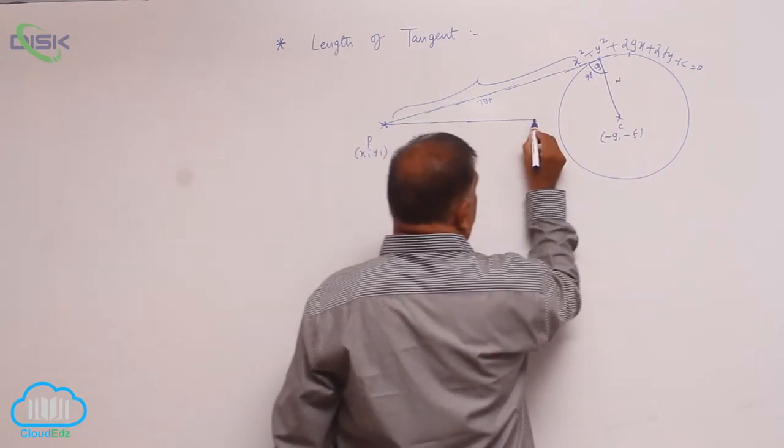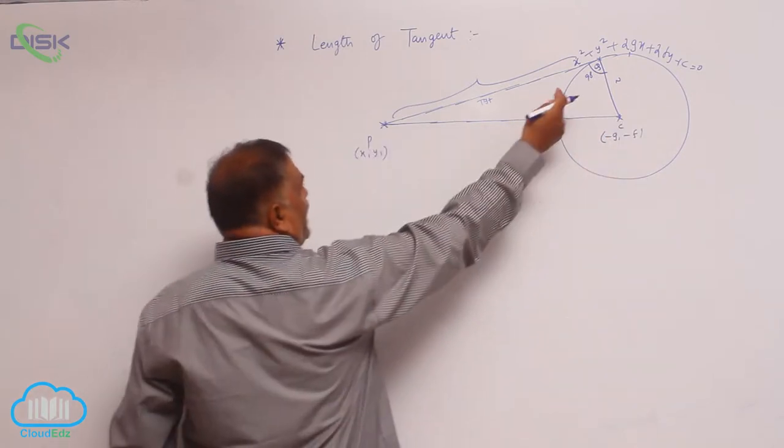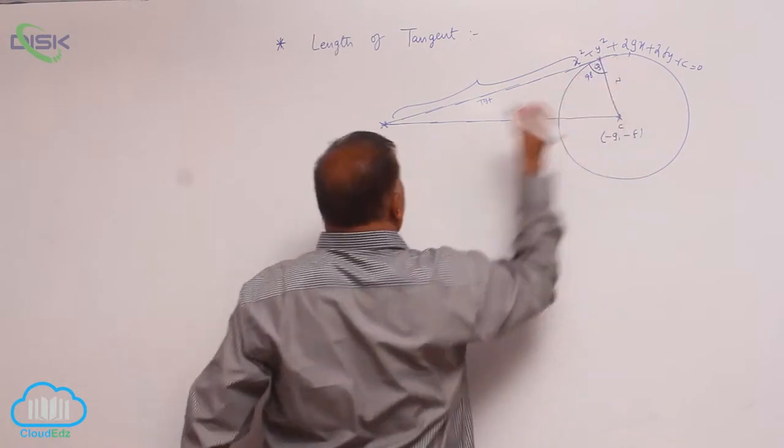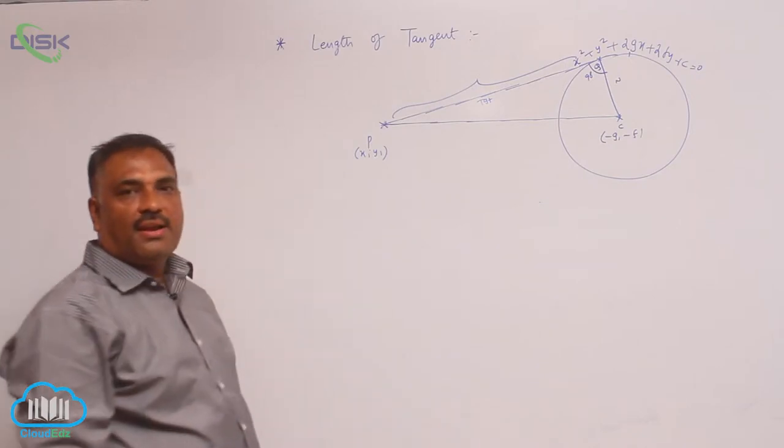Join these two. This is nothing but a right angle triangle C, and let us say QP is going to be the right angle triangle.